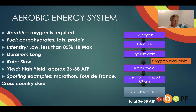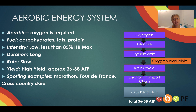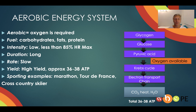The aerobic energy system requires exercising at less than 85% heart rate max for there to be sufficient oxygen supplied to the muscle. The duration for this energy system is long, the rate is slow, and it has a very high yield — every glycogen molecule can yield 36 to 38 ATP. We can get more if we use fats. Sporting examples include any long distance event like marathon, road cycling, Tour de France, and cross-country skiing.